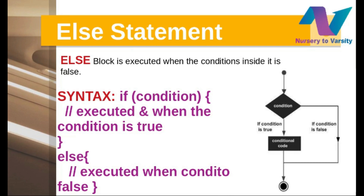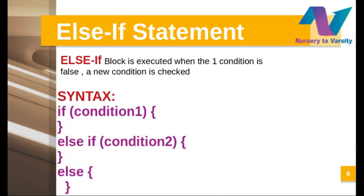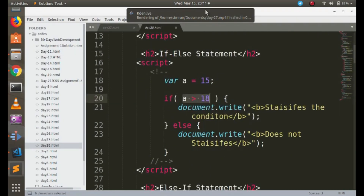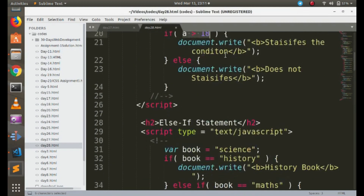Next is the else-if statement. This means if you apply an if condition and it doesn't satisfy, you use else-if to check another condition, and in the final else you handle the remaining case. For example, to compare some values like book names, you write if, then else-if for the second value, and in else print a default result. Let's look at the code.